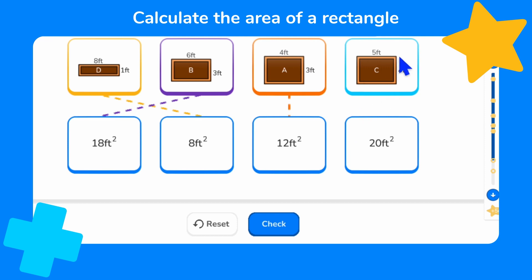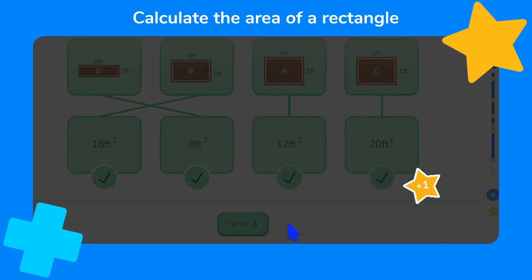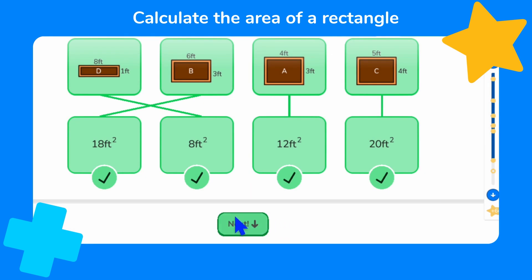Finally, flower bed C has a length of five and a width of four feet. So, to work out its area, we need to solve five times four. It must be 20 square feet. Let's check. Fantastic! That's the first part of the Explore Complete.